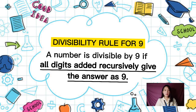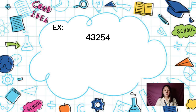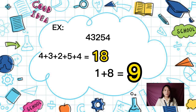A number is divisible by 9 if all its digits, added recursively, give the answer 9. For example, 43,254: add all digits — 4 plus 3 plus 2 plus 5 plus 4 equals 18. Then 1 plus 8 equals 9. So 43,254 is divisible by 9.